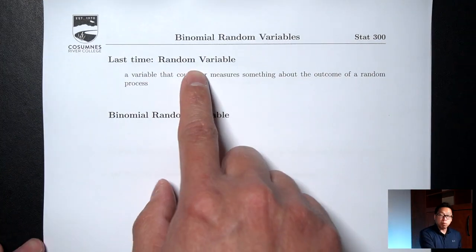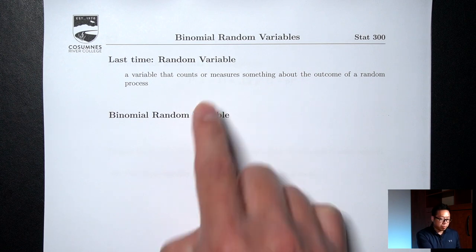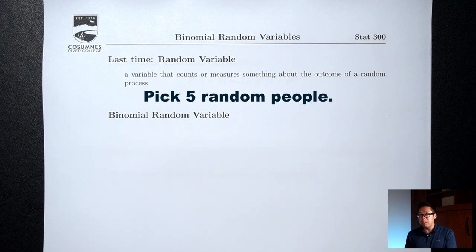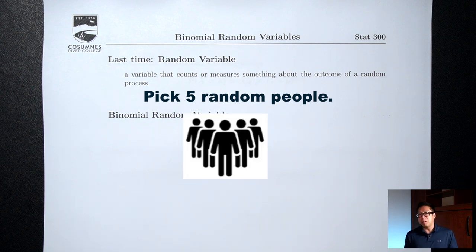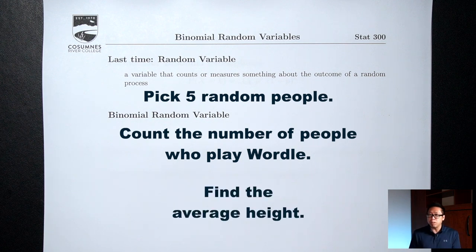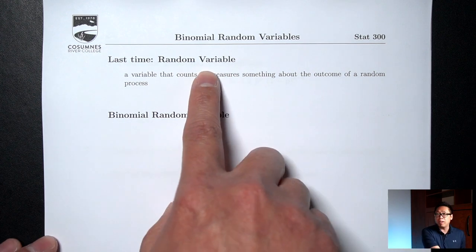Last time we talked about random variables, which were variables that count or measure something about the outcome of a random process. An example was picking five random people. Picking five random people doesn't give you a number — you just end up with five people, not a number. To force things to be numbers, we can measure something about those five people, like counting the number who played Wordle, or measuring their heights and finding the average height. Either way, you end up with a random variable.